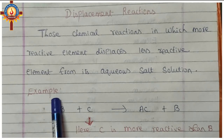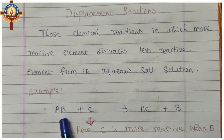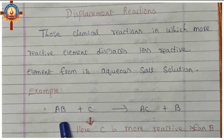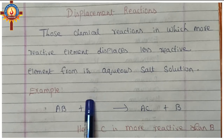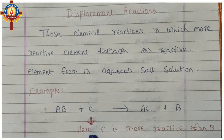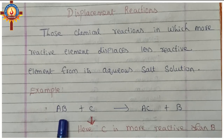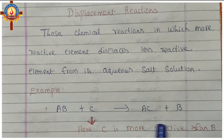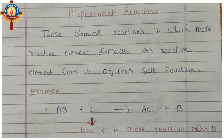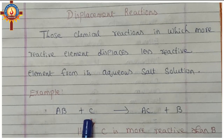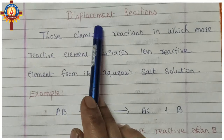In the general form, one compound AB is in the salt solution. When element C is added, it gives AC plus B. Here C is more reactive than B, so C displaces B from A — C is taking the position of B. When one element is displaced by another element in this way, that type of reaction is called a displacement reaction.